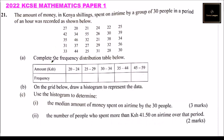Part A asks us to complete the frequency distribution table below. To do this we need to find the amount spent between 20 and 24. We can use the tally method so that we don't mix up the data. So 27 is between 25 and 29.